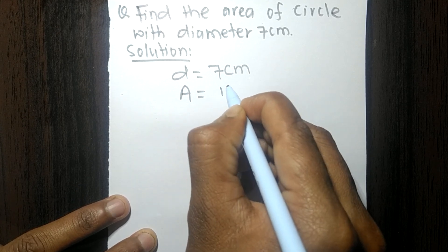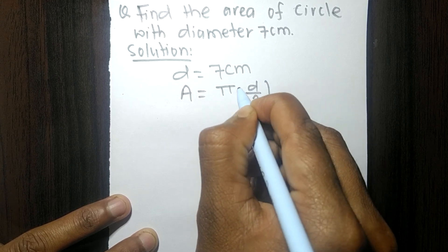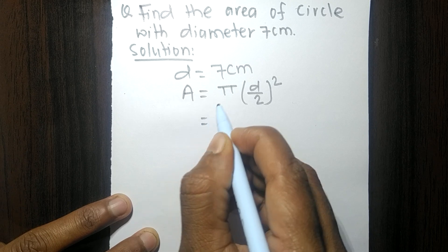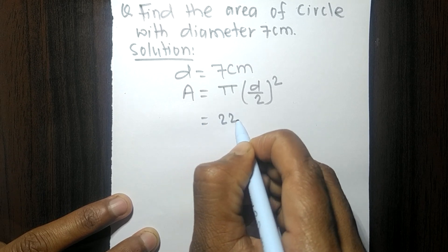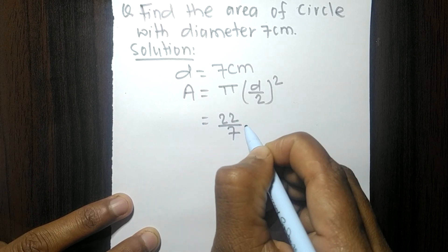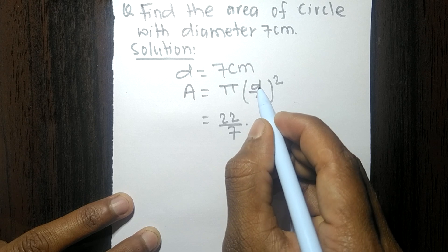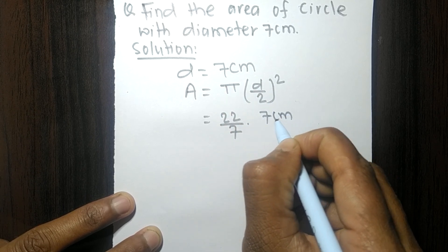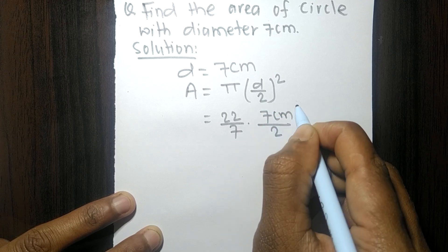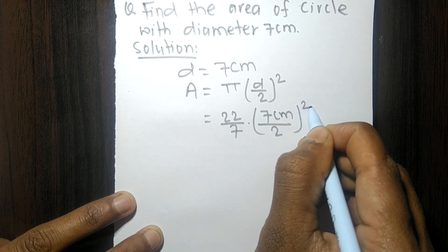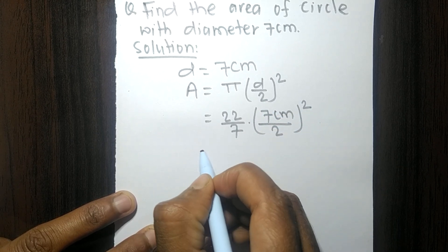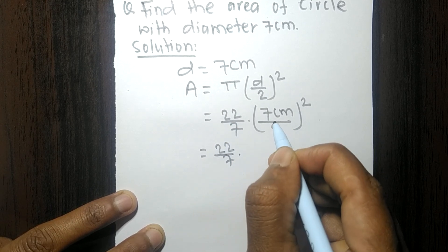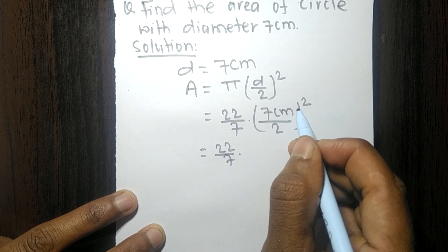The area of a circle is pi times (d/2) squared. The value of pi is 22/7 and the value of diameter is 7 centimeters, so it becomes (22/7) times (7/2) squared.